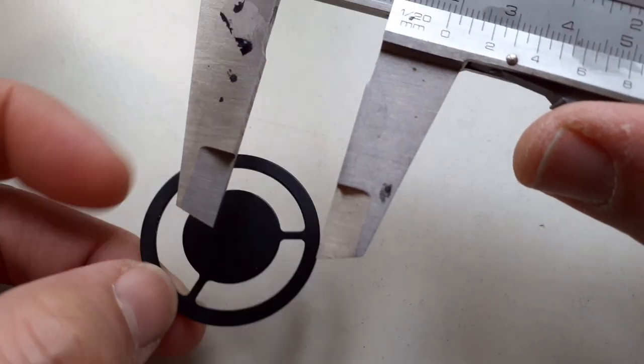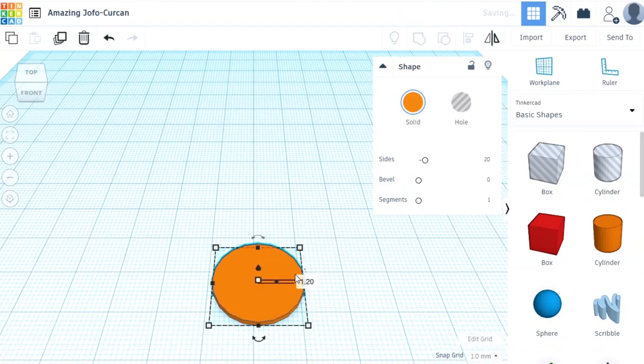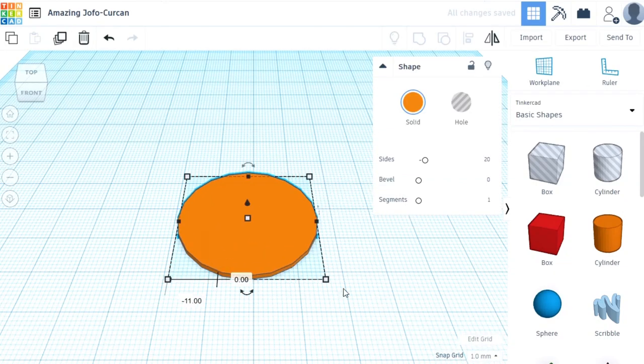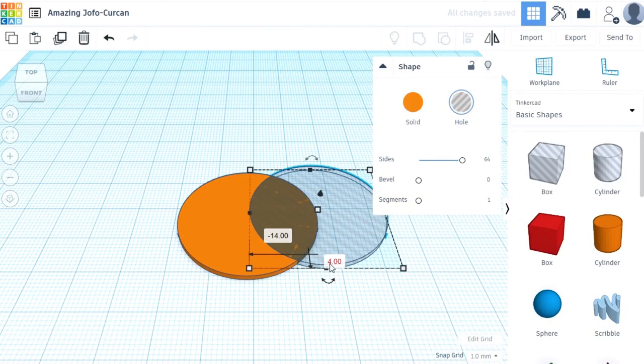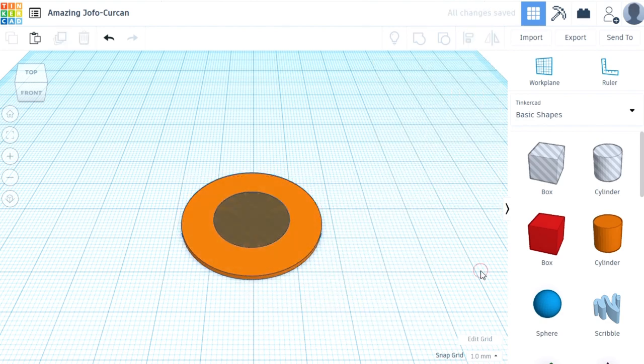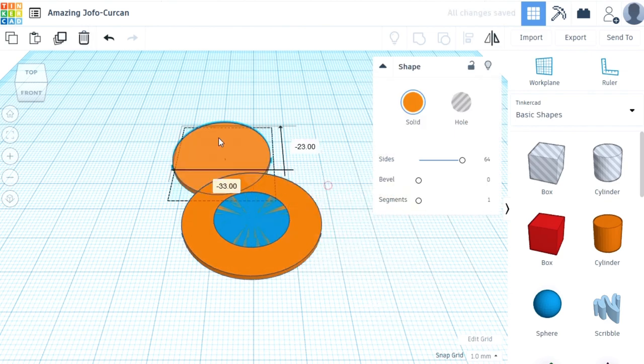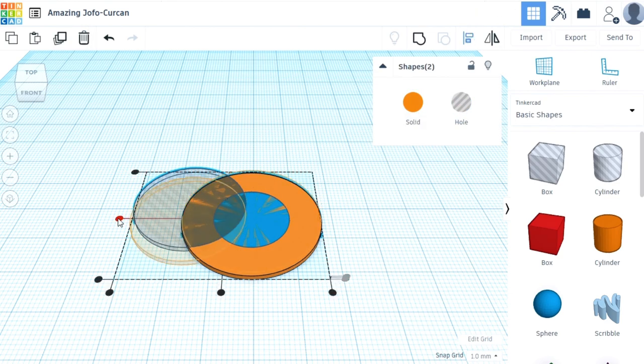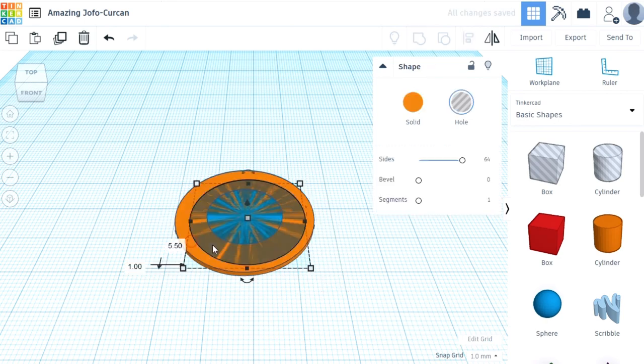And then I started to design the whole thing on the computer and I used the free online program TinkerCAD it's called. All you need is an account, you sign in and you can edit the things directly in your web browser. It's quite easy to use, I only watched a five minute introductory video on YouTube and then I already knew how to use the program, never done CAD design before so it's the first time that I'm doing this.